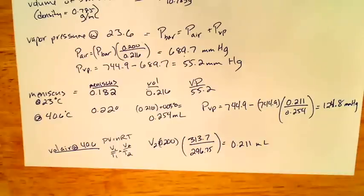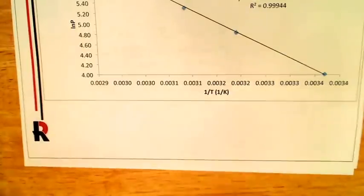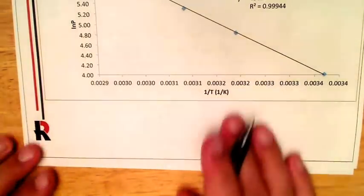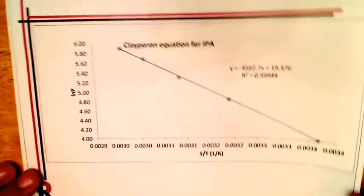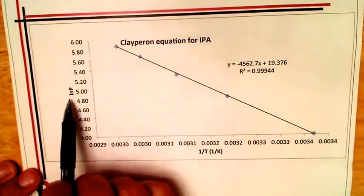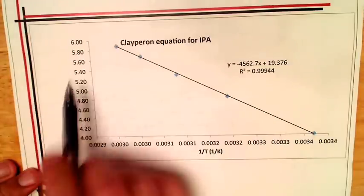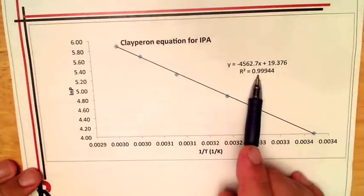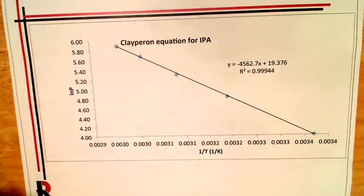And so at the end then, what you should be able to do is then graph. Make sure your temperature is in Kelvin. So you should be able to graph your Clapeyron equation. So you've got to plot one over T on the x-axis. And then natural log, so that's log base E, of the vapor pressure. So if you do that, you'll see you get a nice straight line with a really good slope, or a good R squared value.